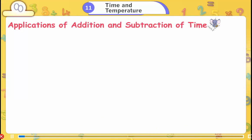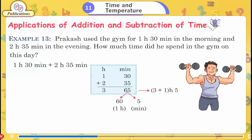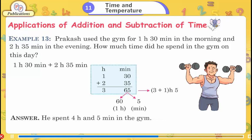Applications of Addition and Subtraction of Time. Example 13: Prakash used the gym for 1 hour 30 minutes in the morning and 2 hours 35 minutes in the evening. How much time did he spend in the gym? 1h 30m + 2h 35m = 3h 65m. Since 65 minutes = 1 hour 5 minutes, the answer is 4 hours and 5 minutes.